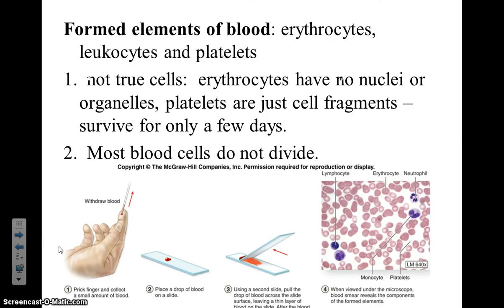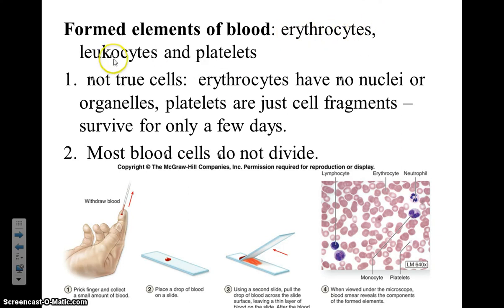The formed elements of whole blood include the cellular components. Erythrocytes are red cells, leukocytes are white cells, and platelets are fragments of cells that will aid in blood clotting.